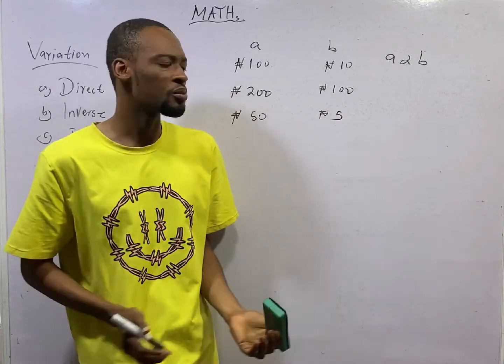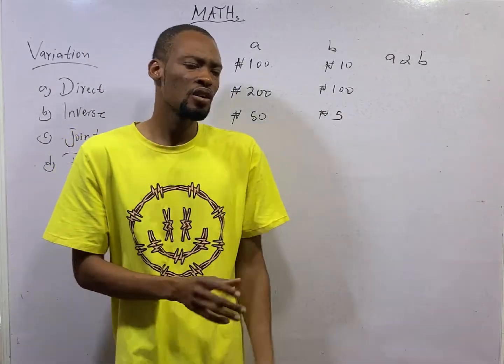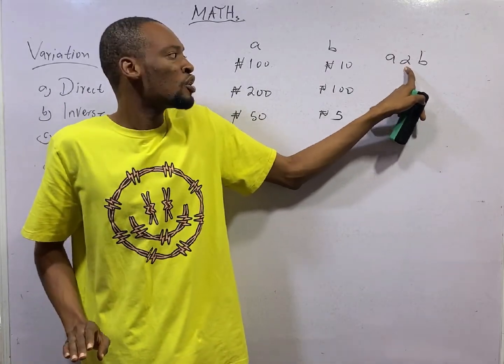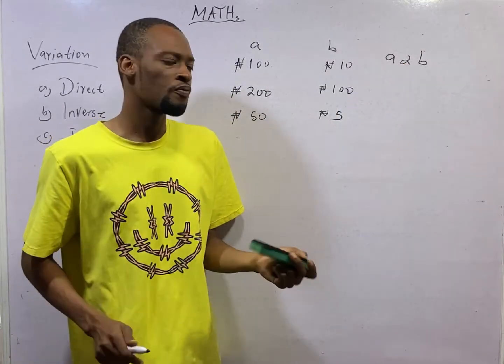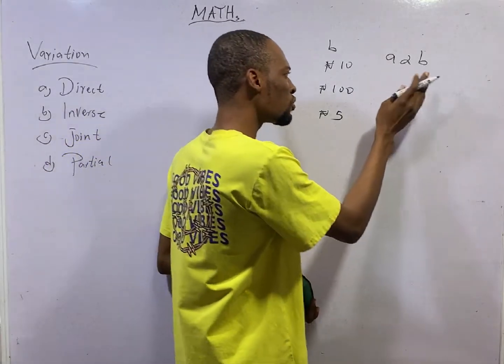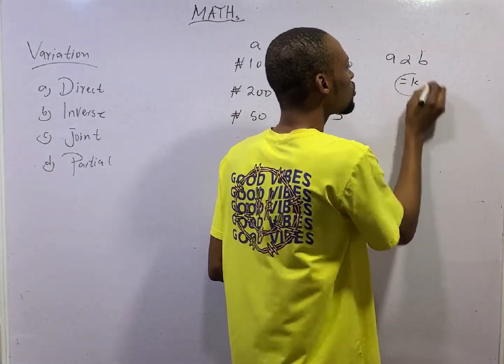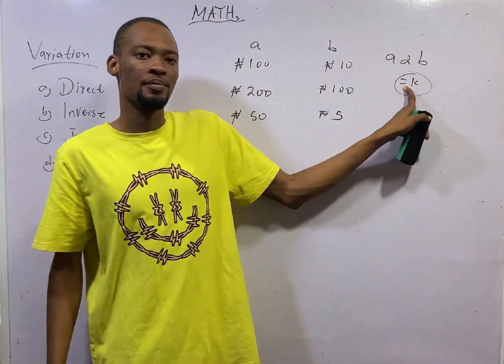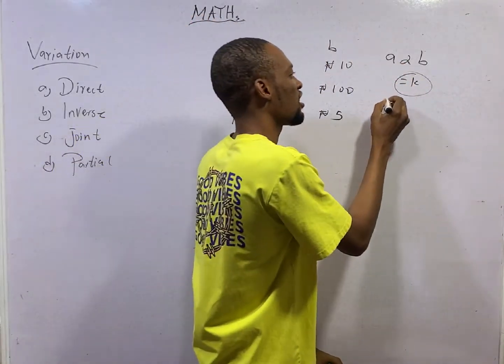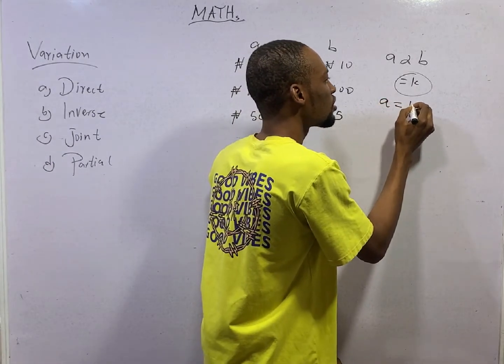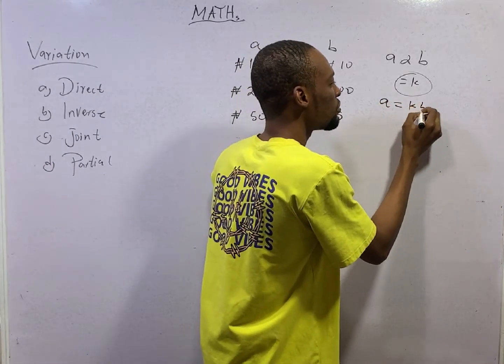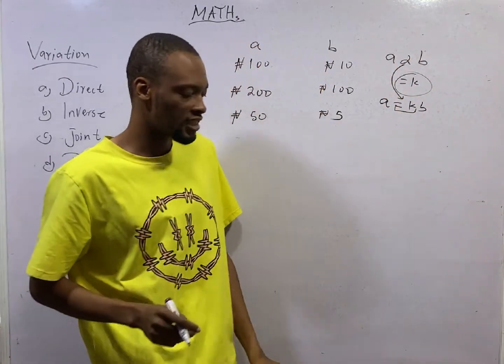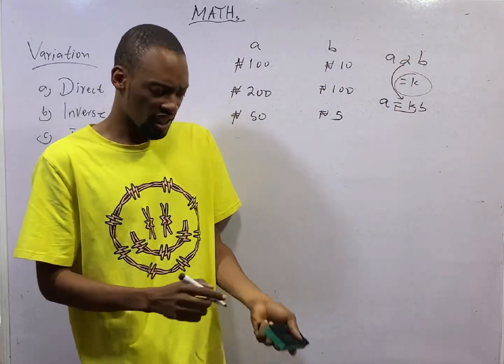If we call your parents' salary A and we call your allowance B, we can say that A varies directly as B or A is directly proportional to B. This implies that as A is increasing, B is increasing. As A is dropping, B is dropping. That is direct variation. In mathematics, we don't solve with variation symbol or proportionality symbol. You must convert them to equal to. Any time you convert this to equal to, you will get a constant equals K. This becomes A equals K times B, where here is proportionality sign.